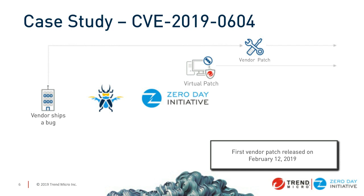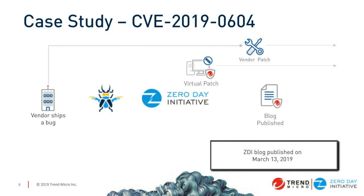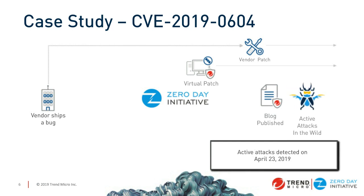This was a really good bug. We worked with the original researcher to blog about it, and I was literally ready to hit publish when we received a frantic email saying the vendor patch was not sufficient and was easily circumvented. We reported that back to Microsoft, and they had to release a second patch on March 12th — 95 days after the virtual patch was deployed. We published our blog on March 13th. This bug did end up being used in active exploits, the first seen on April 23rd — a full 137 days after the virtual patch was available, and 42 days after the second patch was released. End-day exploits were active for 42 days after the second patch, while the virtual patch was already in place.